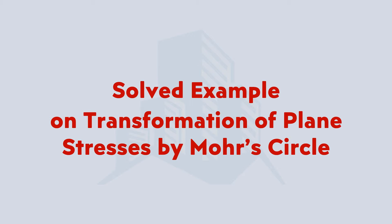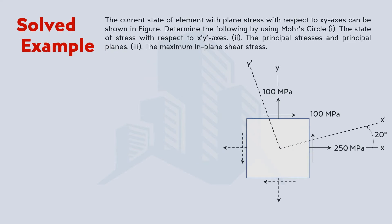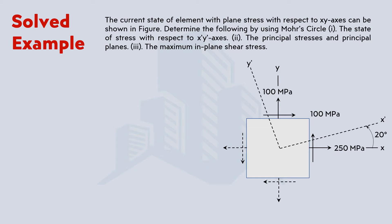Hello everyone. In this video we are going to solve an example related to the transformation of plane stresses by graphical method, that means by using the Mohr circle. The statement of the problem is the same as what we solved for the analytical method. In this example we have been given the current state where normal and shear stresses are acting. In the first part we are asked to calculate the normal and shear stress on a plane when the element is rotated by 20 degrees counterclockwise. In the second part, we calculate the major and minor principal stresses, and in the last part, the maximum in-plane shear stresses.